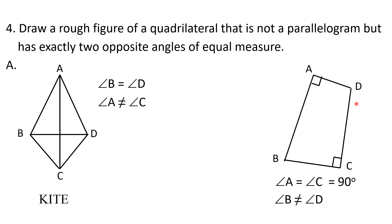Another example comes from question number 3: a quadrilateral where angles A and C are both equal to 90 degrees, but angle B is not equal to angle D. This is the same example used earlier, where two opposite angles are equal but the quadrilateral is not a parallelogram. Both these quadrilaterals satisfy the condition of having exactly one pair of equal opposite angles without being a parallelogram.